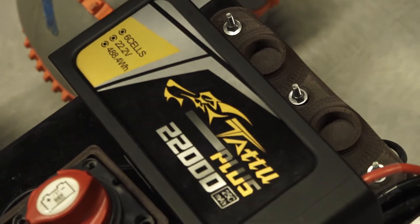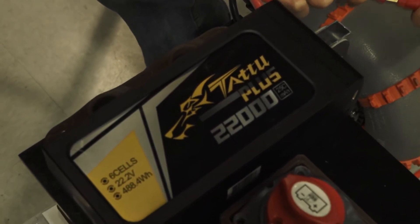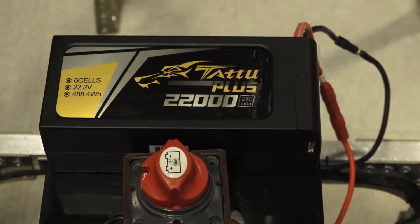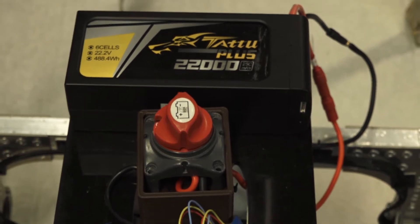Our rover is powered by a 22 amp hour lithium ion polymer battery. We have calculated a run time of two hours over three kilometers in a worst case scenario.